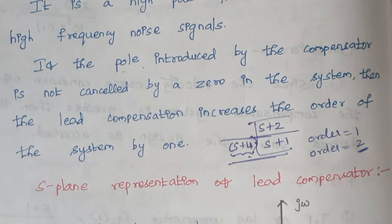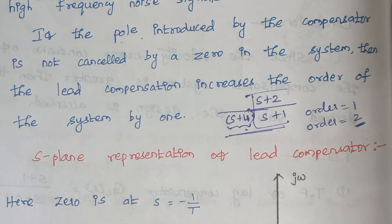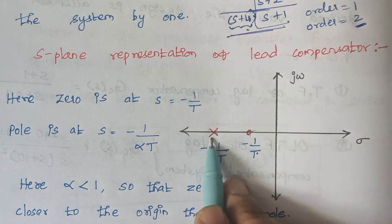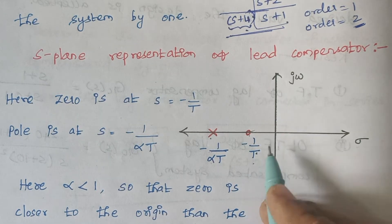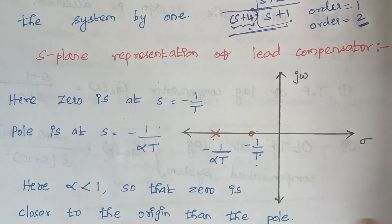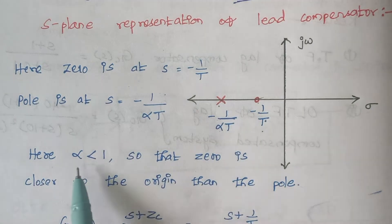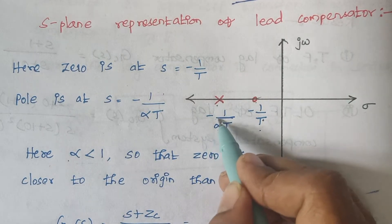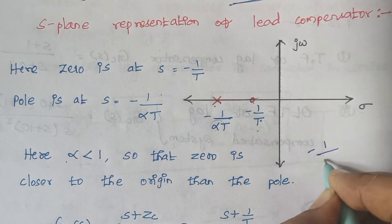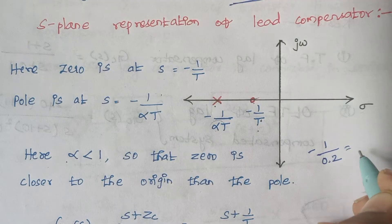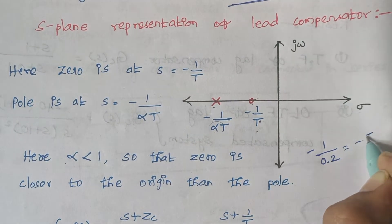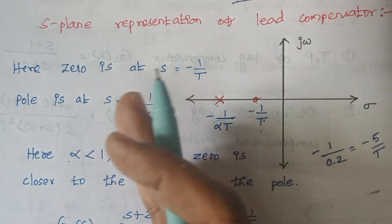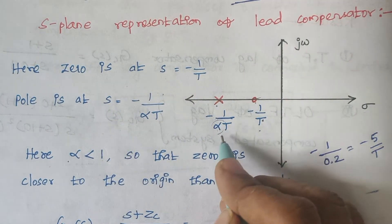The next thing is the s-plane representation of a lead compensator. Consider an s-plane where we have a zero first, then a pole. The zero is given by −1/T and the pole is given by −1/αT. The condition is that the value of α must be less than 1. For example, if α = 0.2, then −1/αT = −1/(0.2T) = −5/T. So we have −1/T and −5/T, confirming the arrangement is correct and α must always be less than 1.